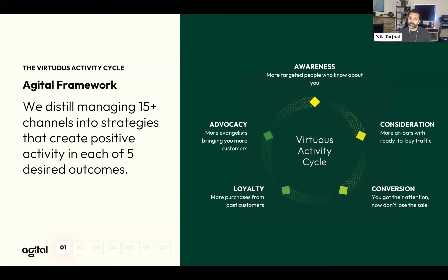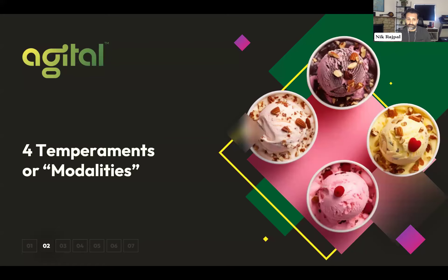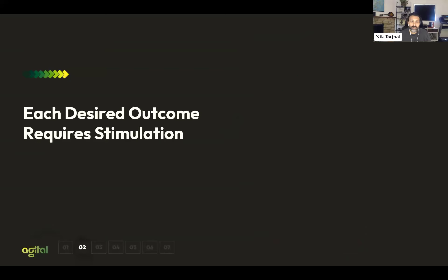We want to get activity in these five different centers, and if we do get bright activity in all five areas, it starts to spin a virtuous cycle of growth — it does it every time. So how does consumer psychology, temperaments, and modalities play in? Well, each of those desired outcomes — awareness, consideration, conversion, loyalty, advocacy — requires a specific psychological trigger.